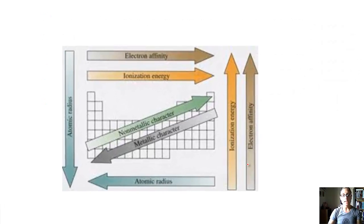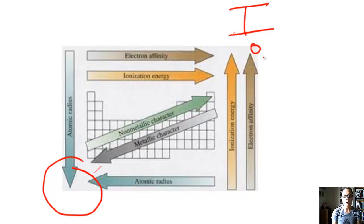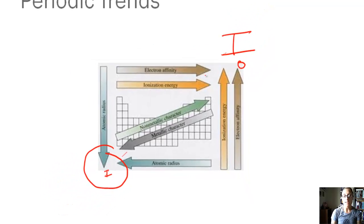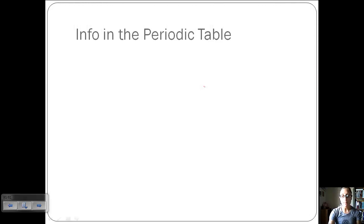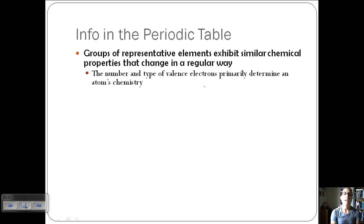Looking at periodic trends in general: the largest atom is found at the lower left and the smallest at the upper right. Ionization energy increases going across a period and decreases going down, and electron affinity follows the same trend. Groups of representative elements exhibit similar chemical properties that change in a regular way, because the number and type of valence electrons primarily determine an atom's chemistry — valence electrons are involved in bonding.